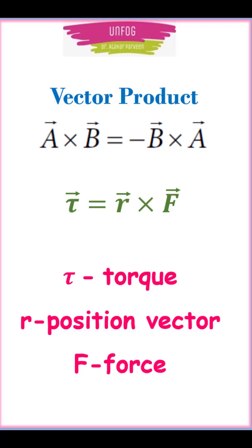One should note that order of vectors is very important in vector product. That is, A cross B is equal to minus B cross A and not just B cross A.